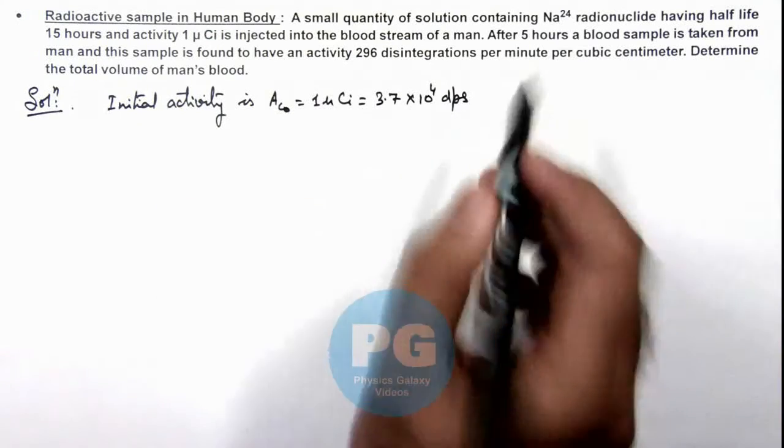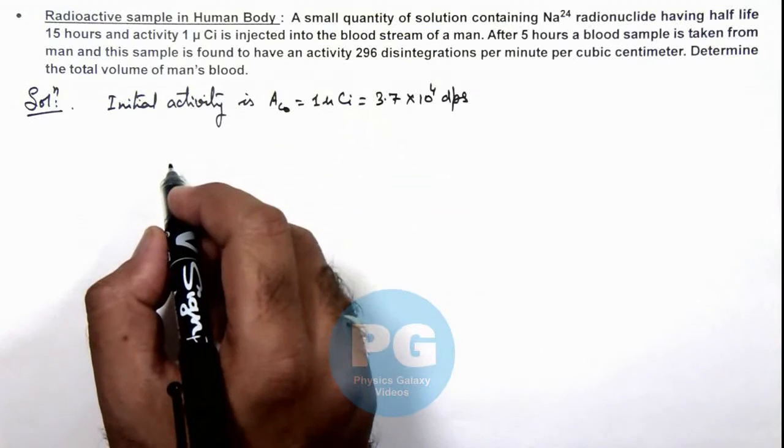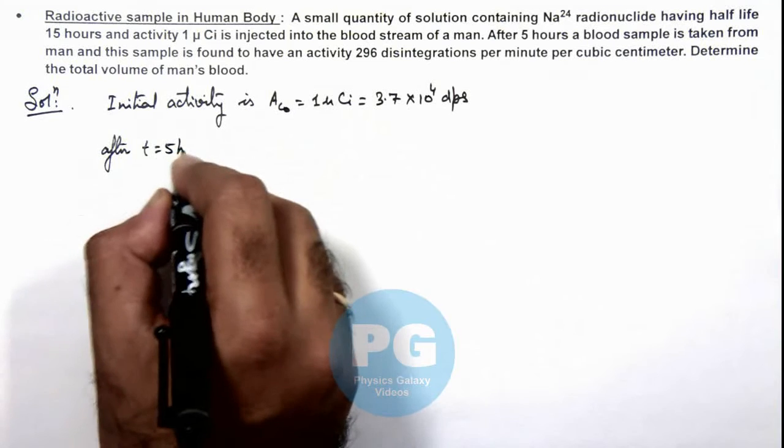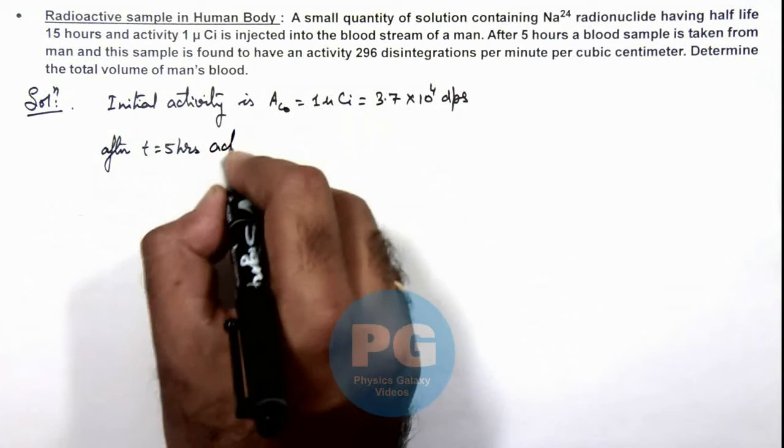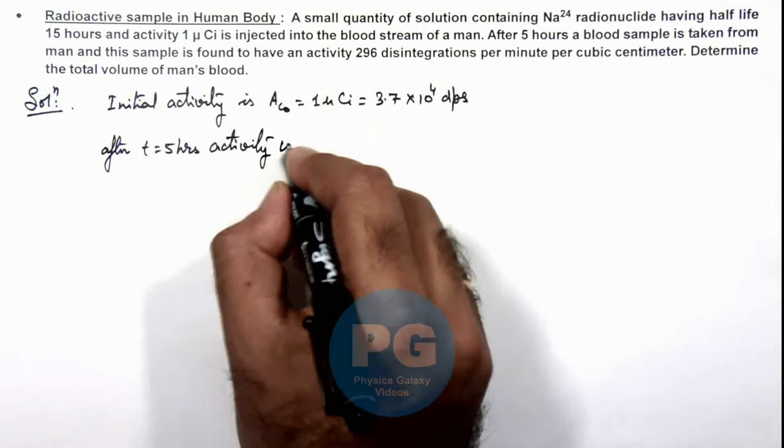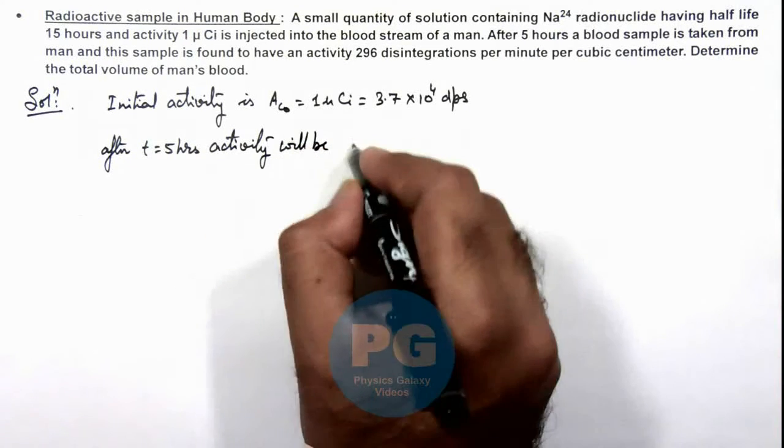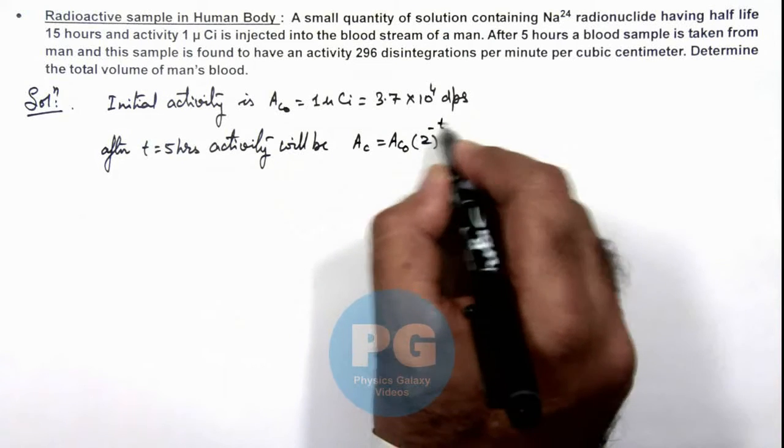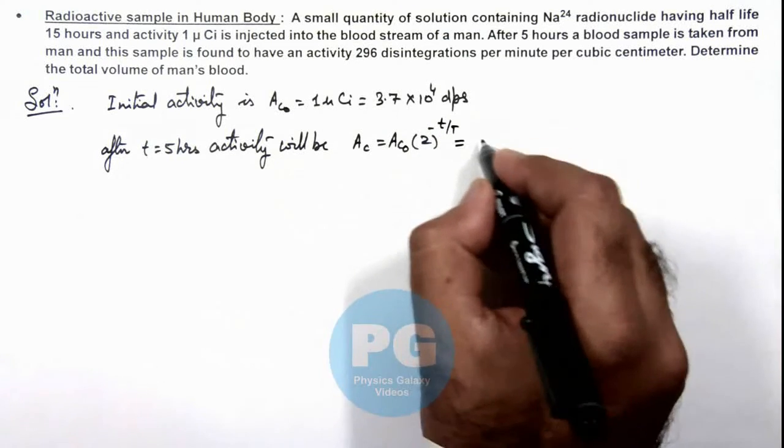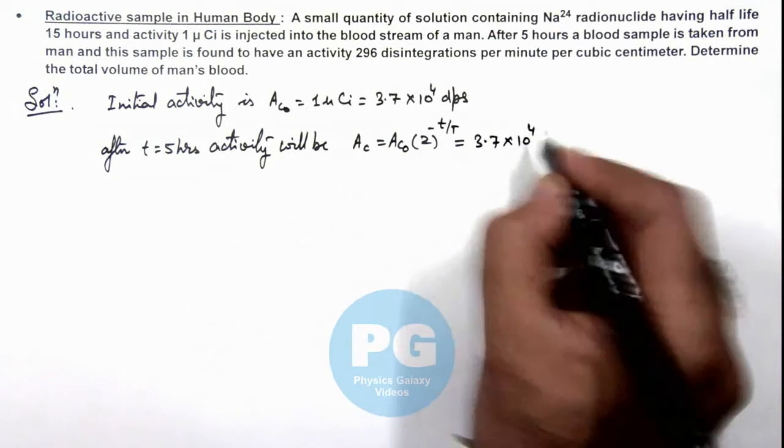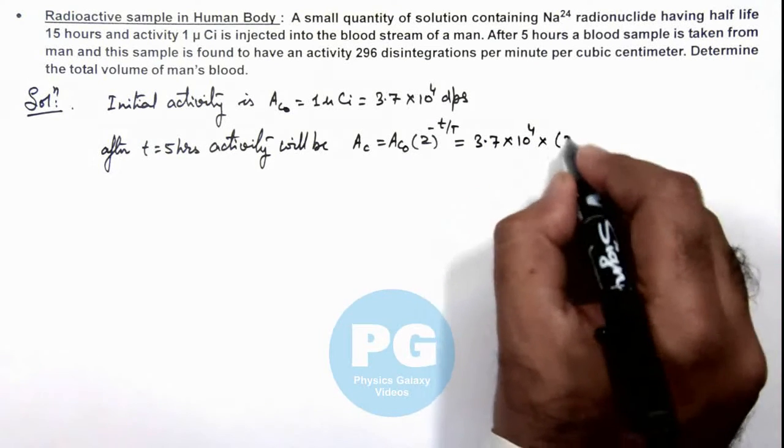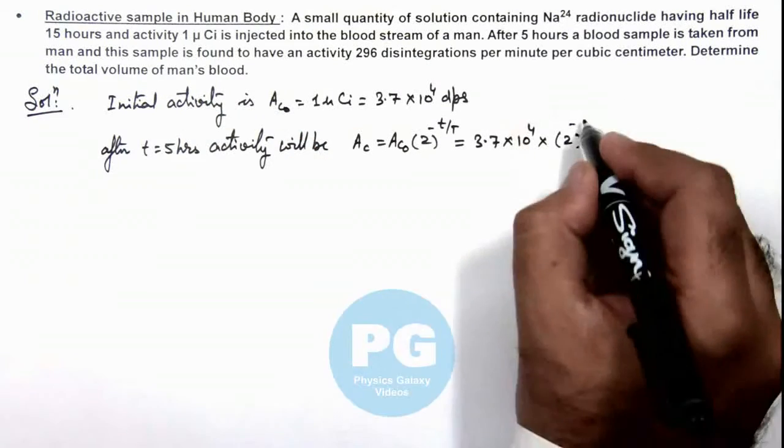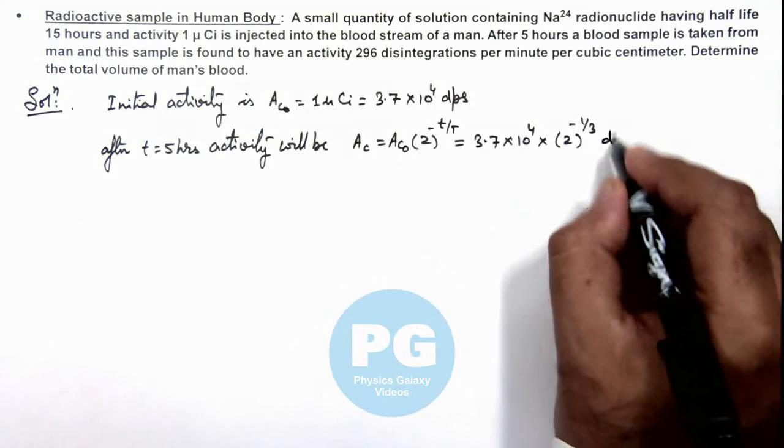If after 5 hours we calculate the total activity within the man's blood, we can write after t = 5 hours, activity will be A = A₀ × 2⁻ᵗ/ᵀ. So this is 3.7 × 10⁴ multiplied by 2⁻⁵/¹⁵, so this is 1/3, disintegrations per second.